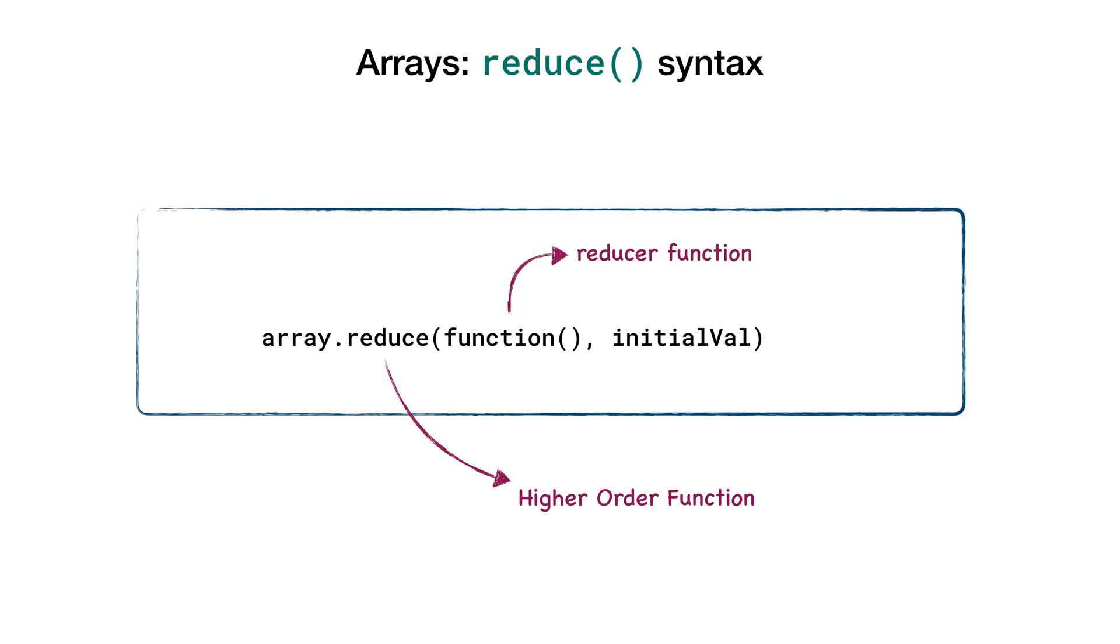The first argument to reduce is a function which is called reducer function. And the second argument is an optional initial value.